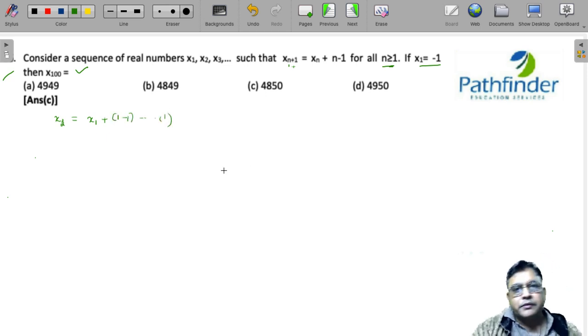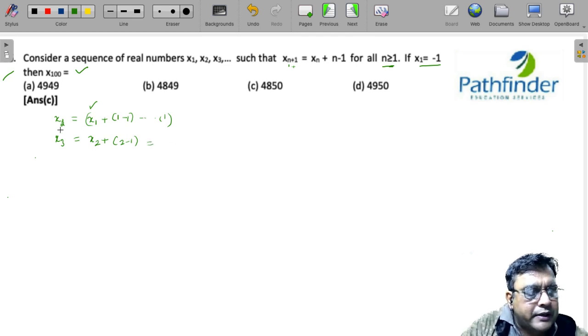What about x3? For x3 you will have to put n = 2, so x3 = x2 + 2 - 1. But I have already calculated x2 as x1 + 1 - 1, so I will plug the value of x2 that I have calculated. Here x1 + 1 - 1 + 2 - 1.